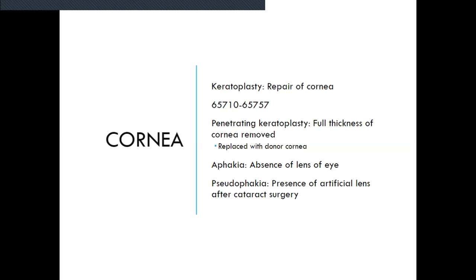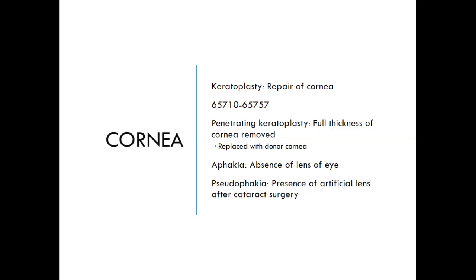Now we're going to talk about the cornea. The cornea is the transparent part of the eye. Here are some examples of procedures: a keratoplasty is a repair of the cornea, codes 65710 to 65757. A penetrating keratoplasty involves full thickness of the cornea removed and replaced with a donor cornea. Aphakia is the absence of the lens of the eye. And pseudoaphakia is the presence of an artificial lens after cataract surgery.